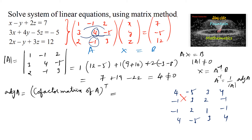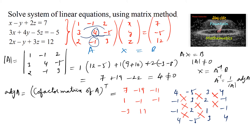Computing the cofactors: 4 times 3 is 12, minus 5 gives 7; negative 5 times 2 is negative 10, minus 9 gives negative 19. Then negative 3 minus 8 is negative 11; negative 2 plus 3 is 1. Next: 3 minus 4 is negative 1; 2 times negative 1, plus 1 is negative 1. Then 5 minus 8 is negative 3; and 6 plus 5 is 11.